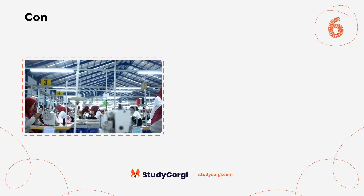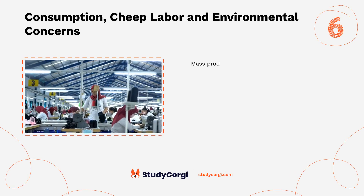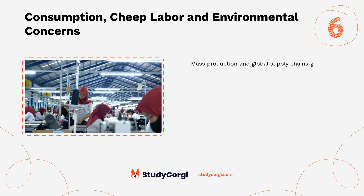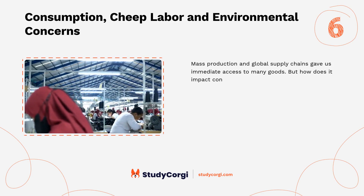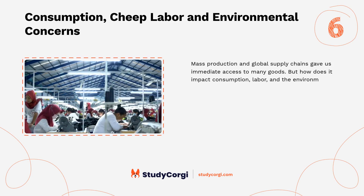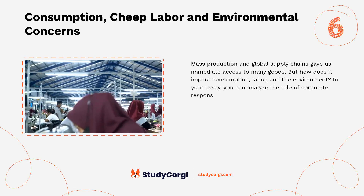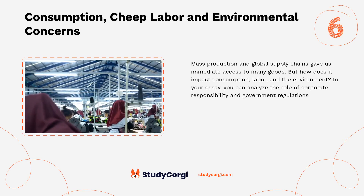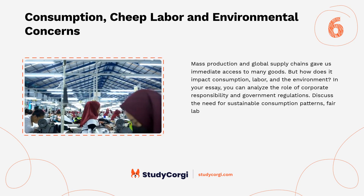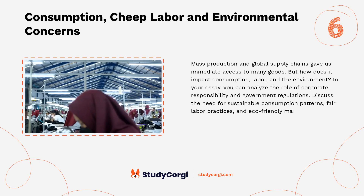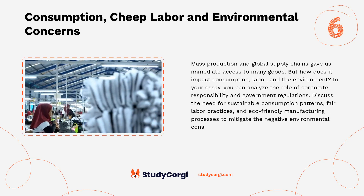Topic six: consumption, cheap labor, and environmental concerns. Mass production and global supply chains gave us immediate access to many goods, but how does it impact consumption, labor, and the environment? In your essay you can analyze the role of corporate responsibility and government regulations. Discuss the need for sustainable consumption patterns, fair labor practices, and eco-friendly manufacturing processes to mitigate the negative environmental consequences of consumerism.